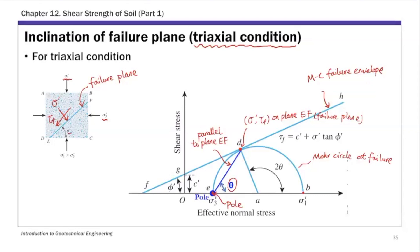From this drawing, you can find the angle theta. The angle at the center corresponds to 2 theta. Since the failure envelope is tangent to the Mohr circle, that forms a 90-degree angle. Therefore, 2 theta equals 90 degrees plus phi prime. That is the relationship between the failure plane angle theta and the friction angle phi prime.